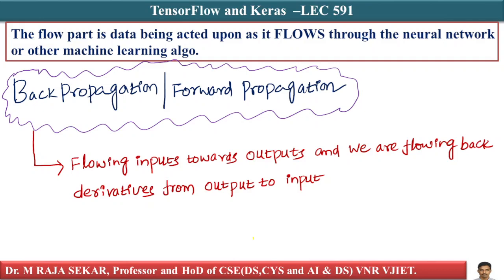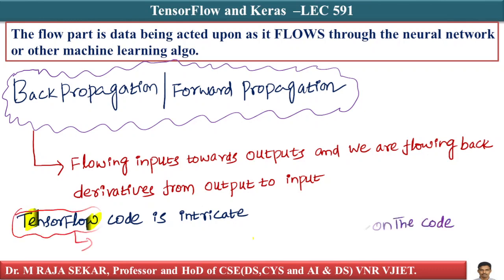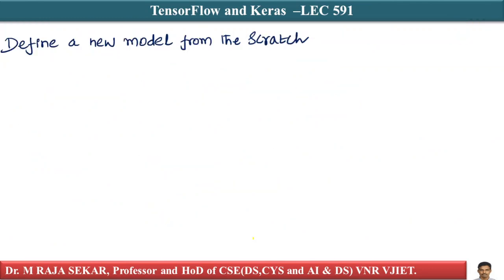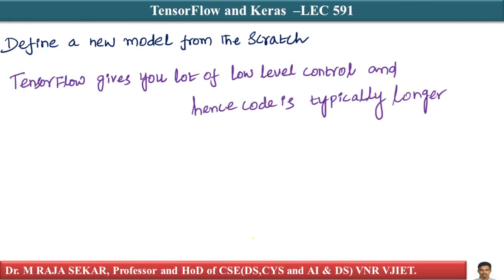TensorFlow code is intricate and gives you a lot of low-level control. You can define a new model from scratch, define a new activation function instead of ReLU, or control how execution happens. The amount of code you write in TensorFlow is typically longer, and when I started using TensorFlow I was thoroughly confused — it requires lots of patience.